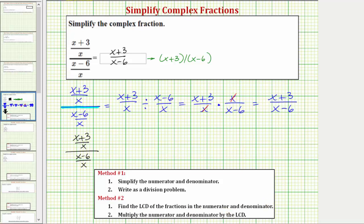In this case it's pretty straightforward because the fraction on top has a denominator of x and the fraction on the bottom also has a denominator of x. Therefore the least common denominator is x. For step two we multiply the numerator and denominator by the LCD.